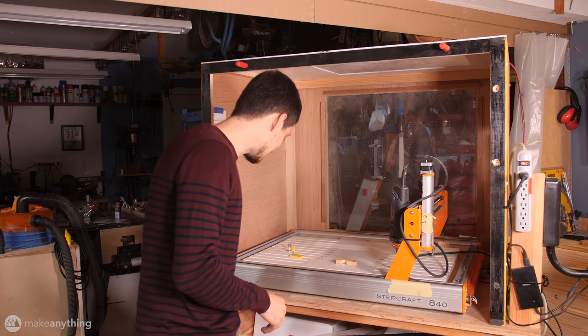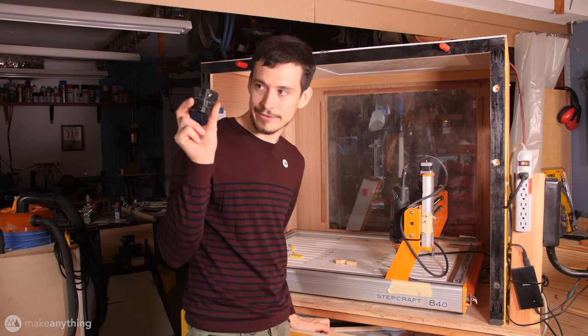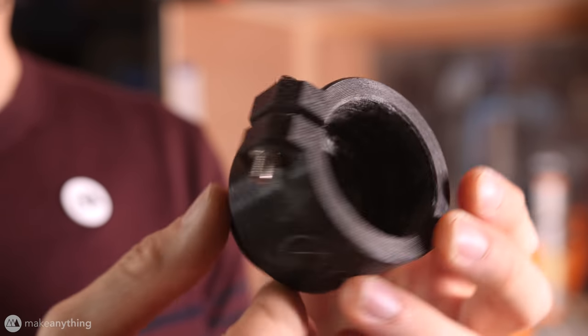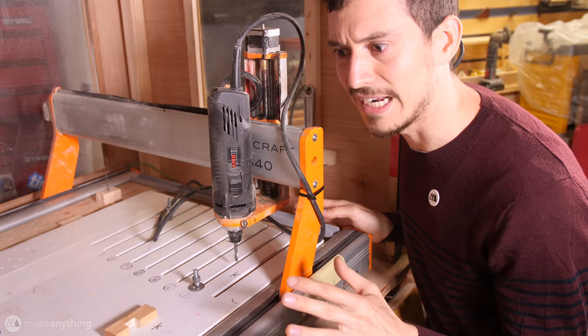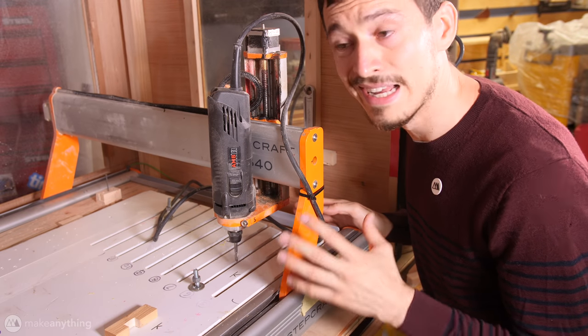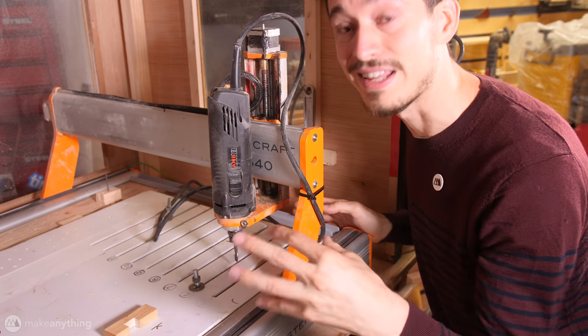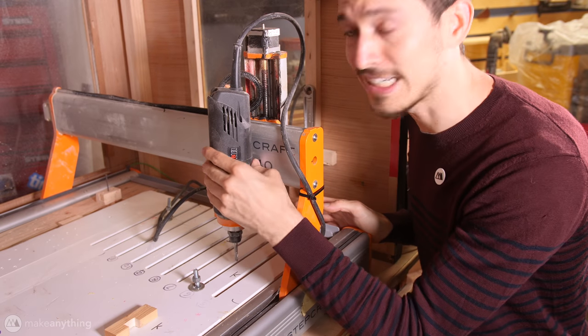Now I also used that same material for one other print. And that's this thing right here. So this is actually an adapter that I've created for the CNC. So to break things down in a super basic way, the CNC is a lot like a 3D printer, except for instead of building things up, it cuts away at things using a drill bit. And that's connected to this.